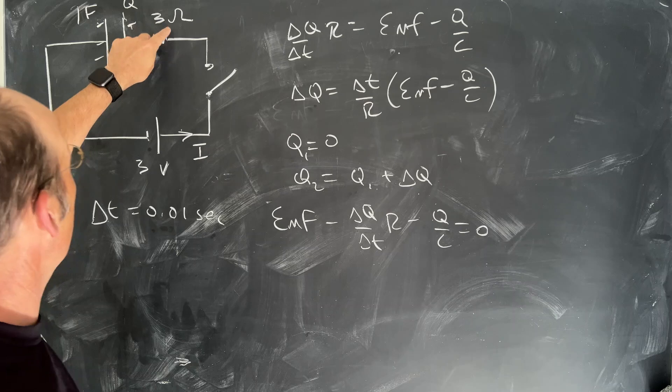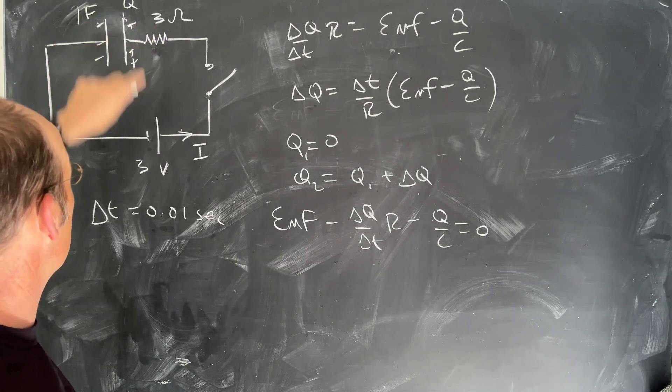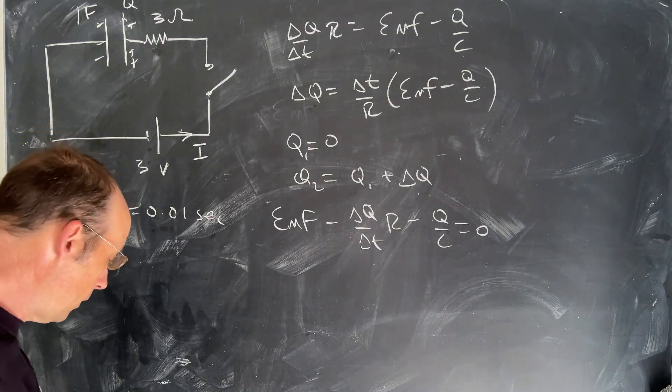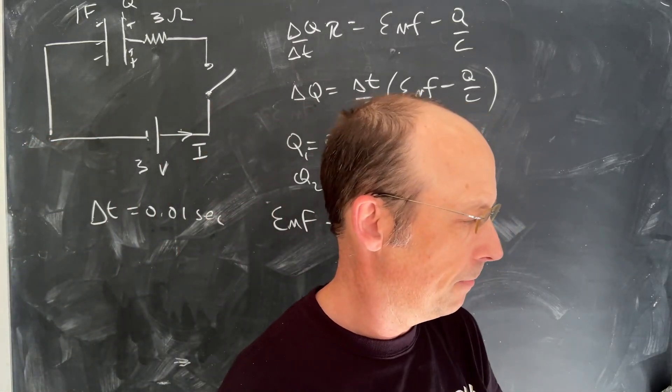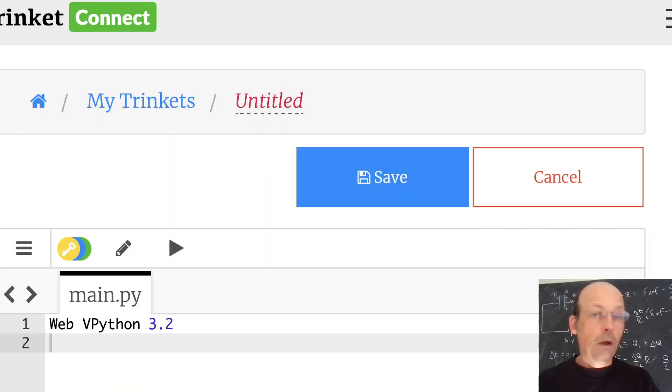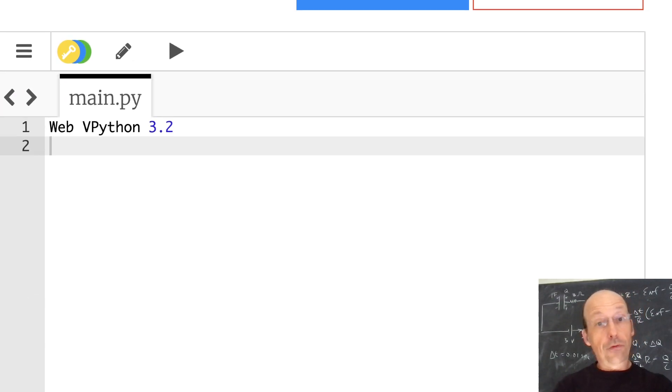We're going to do a computer. So I have my values here for R. I'm going to start off with Q equals 0. I have EMF right there. Let's just get to it. I'm going to do this in Python. I'll give you the code down below.